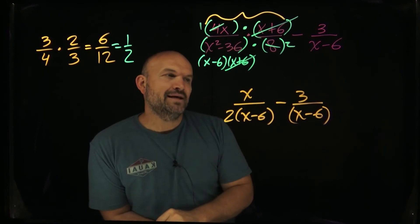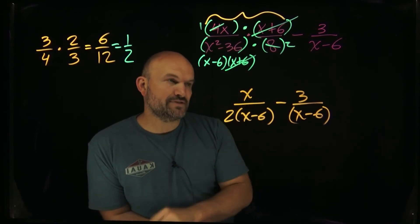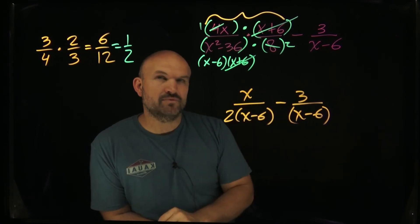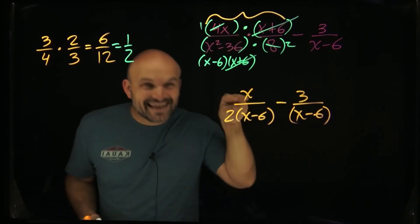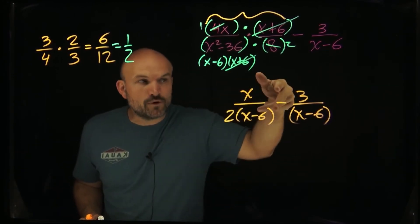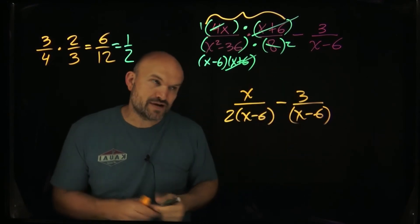The reason why I did that is because when I want to simplify these with parentheses, I need to make sure I get common denominators. Multiplying fractions, you just multiply straight across. You don't really care what the denominators are. In this example, we got to make sure we have common denominators before we can combine them. That means adding or subtracting them.